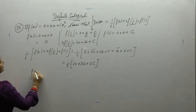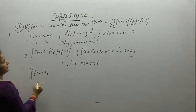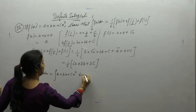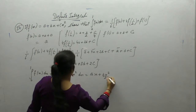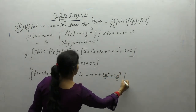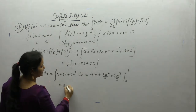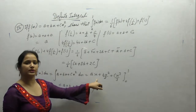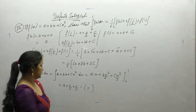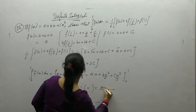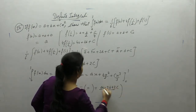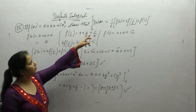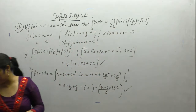Now integrate f(x) dx within the limits 0 to 1. The integral of (a + bx + cx²) is ax + bx²/2 + cx³/3, evaluated from 0 to 1. Putting the upper limit: a + b/2 + c/3, and the lower limit gives 0. This equals (6a + 3b + 2c)/6. This matches the right-hand side, so the result is proved.